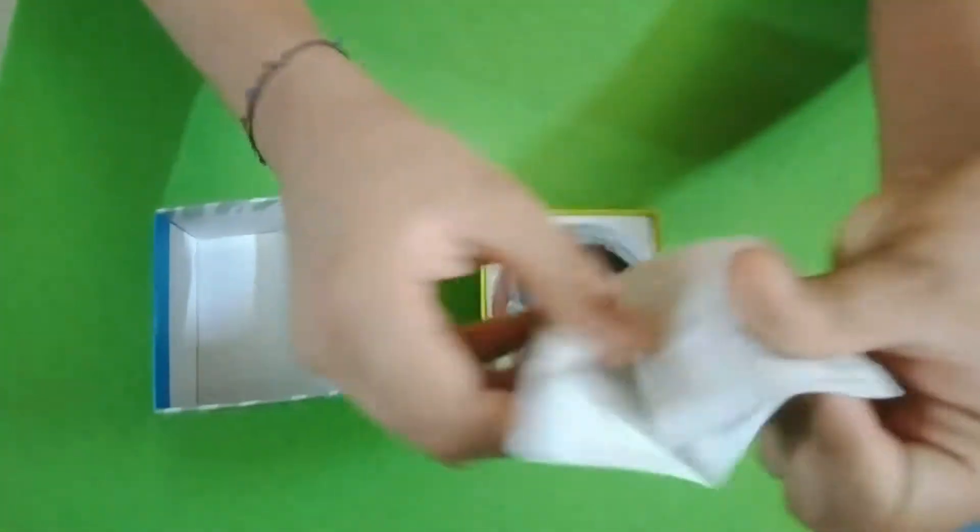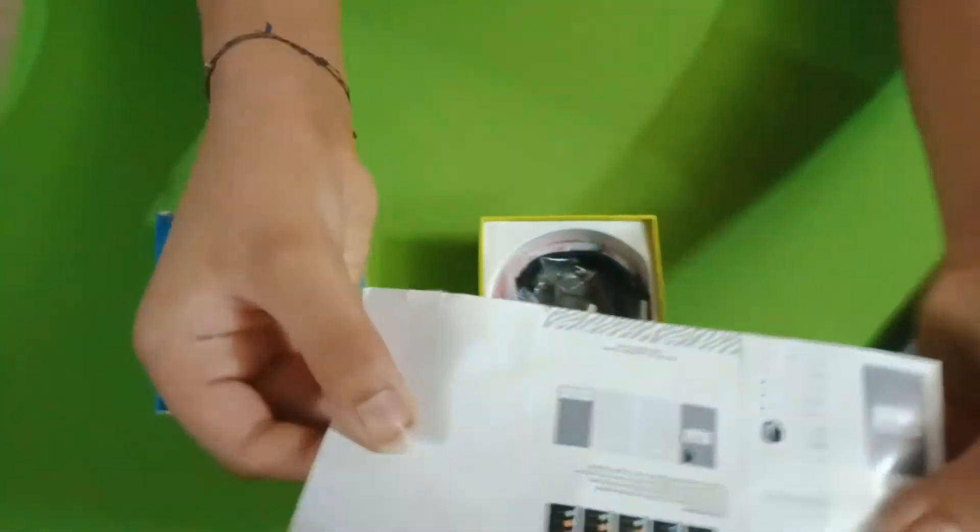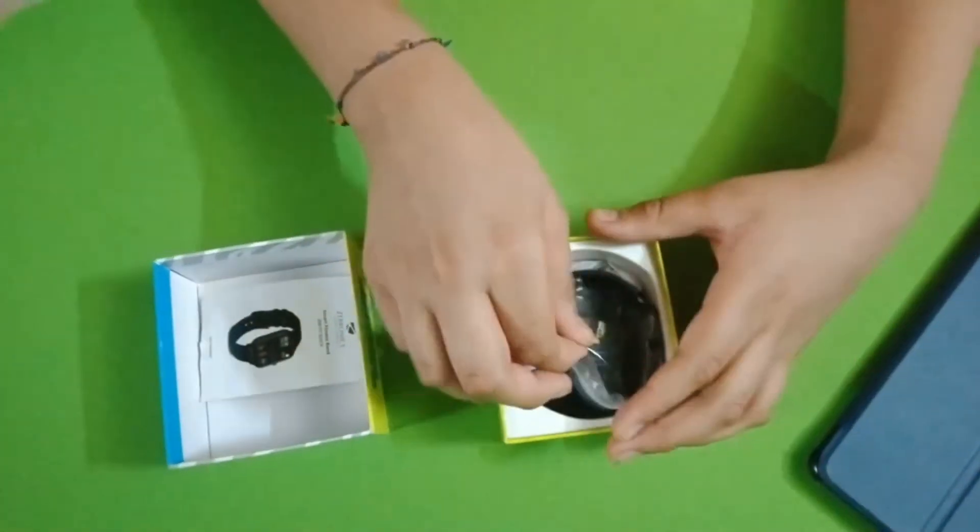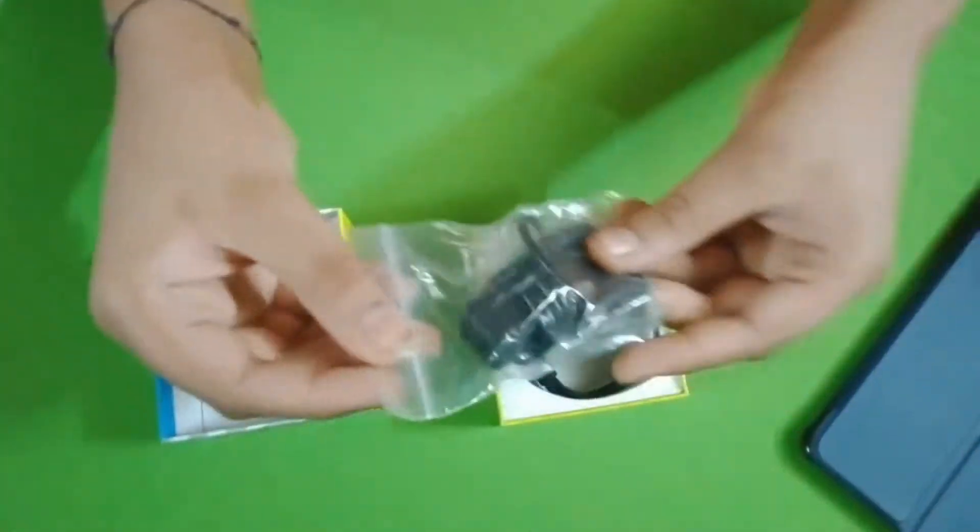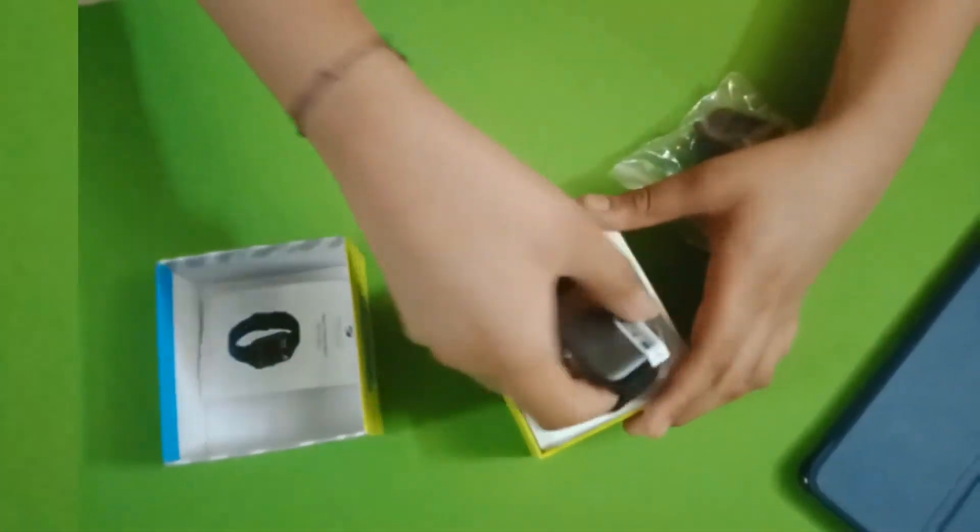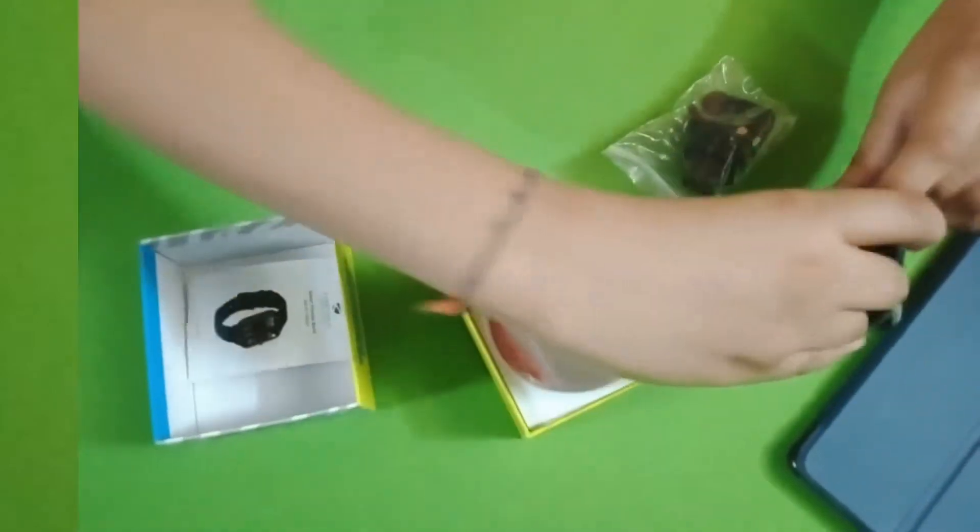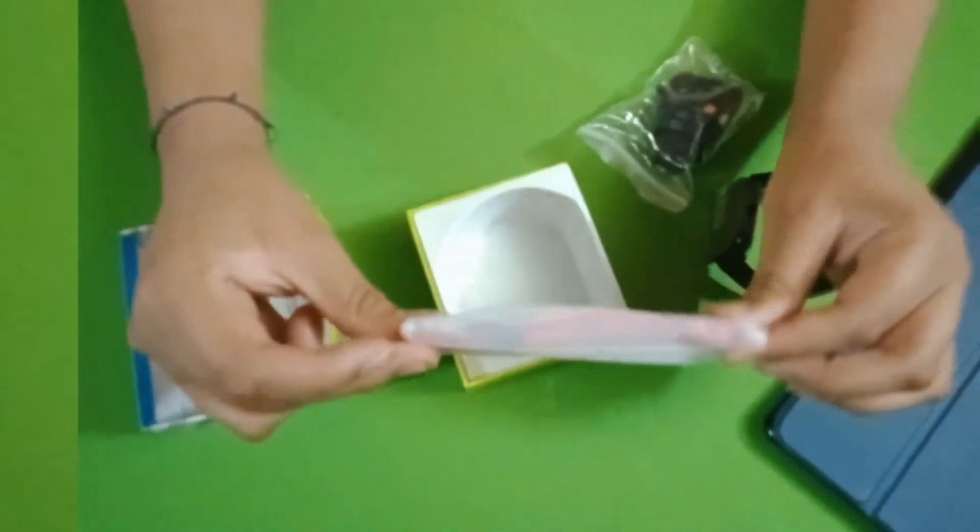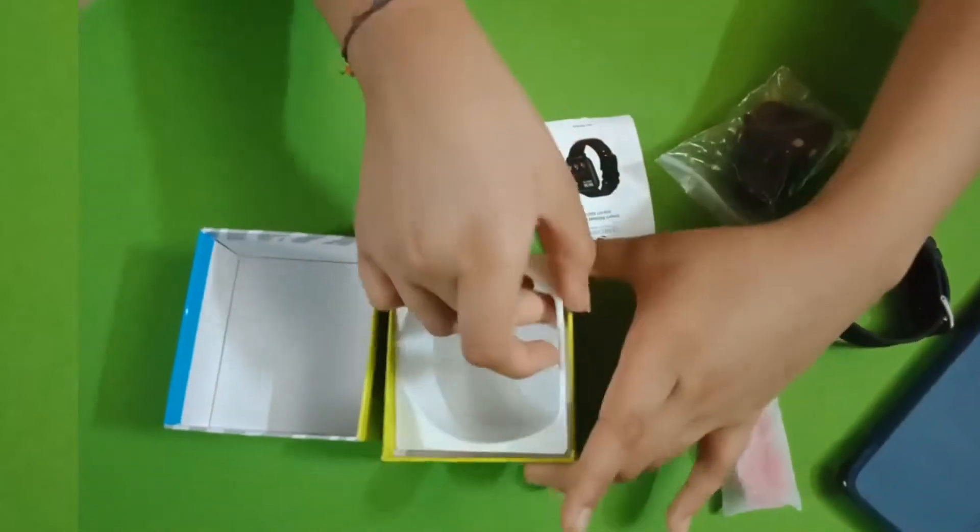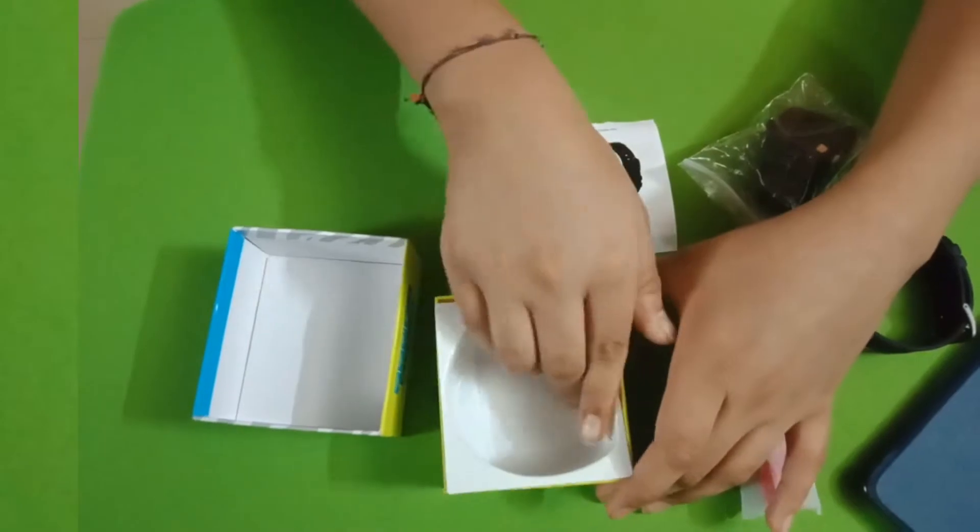So here is the user manual for the watch. And here is the charger for the watch. And there is the watch itself, which looks very nice. And here are the extra straps which you get with the watch in case you want to replace them. And there is nothing else in the box.